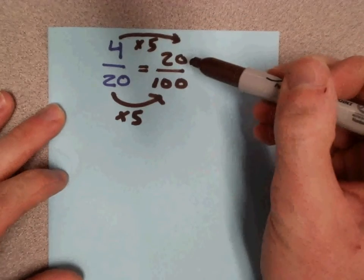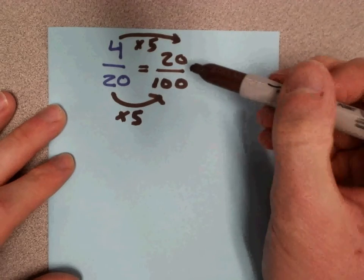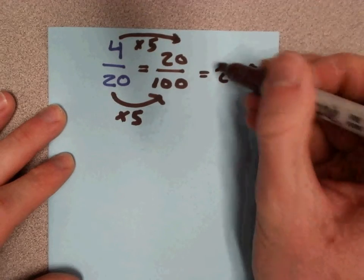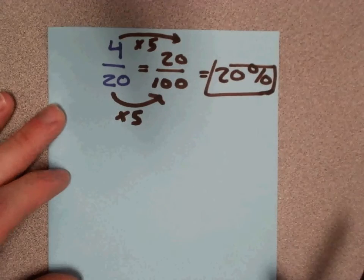Now the top number, the numerator, is 20. The bottom number, the denominator, is 100. So all we're going to do is take this top number, this 20, and put it in front of a percent sign. So 4 over 20 is 20%.